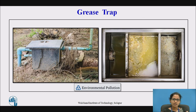The grease trap is mostly used in large hotels and restaurants to collect oily material or oily substances. It is used to prevent oily substances from entering into the drainage system, so that foul gases or scum do not cause blockage. The greasy matter floating on the top can be easily removed using this trap.